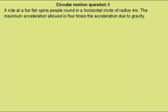Circular motion question 3. A ride at a funfair spins people around in a horizontal circle of radius 4 meters. The maximum acceleration allowed is 4 times the acceleration due to gravity.